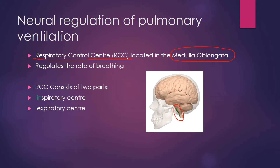Our RCC consists of two parts: the inspiratory center, highlighted in green, which is in charge of the breathing in process, and the expiratory center within the medulla oblongata, which is concerned with the breathing out process.